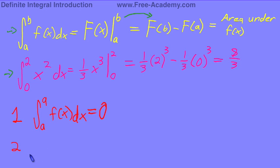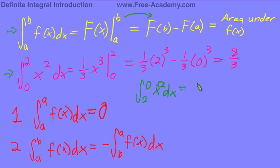Rule number two: if you take the definite integral from a to b of f(x)dx, that is going to equal the negative integral from b to a of f(x)dx. We'll use our x squared example - if we did the integral from two to zero of x squared dx, that's going to give us one-third zero to the third minus one-third two to the third, which equals negative eight-thirds.